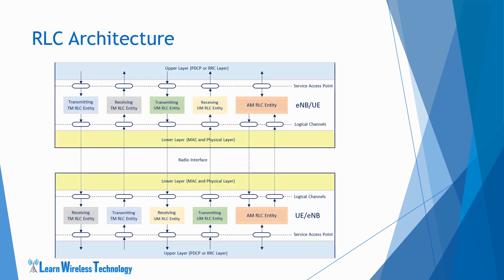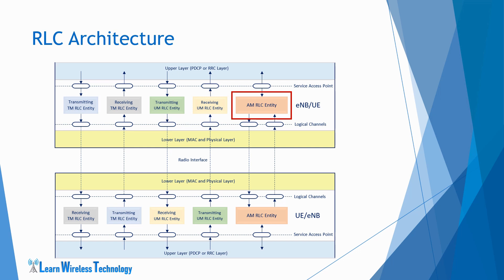This is the architecture of the RLC layer. The RLC layer consists of RLC entities which are configured to perform data transfer functionality. An RLC entity can be configured in one of three modes: transparent mode, unacknowledged mode, and acknowledged mode.